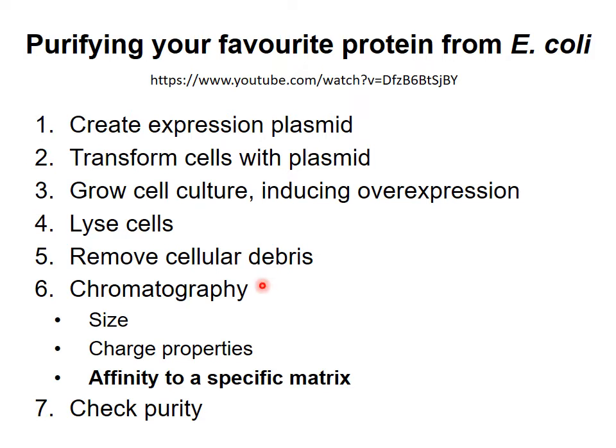To separate your favorite protein from other proteins, you usually use column chromatography. There are different types of chromatography which separate proteins based on different properties, such as size or charge. Very commonly, to simplify purification, people will engineer an affinity tag into their protein of interest at the level of the gene.